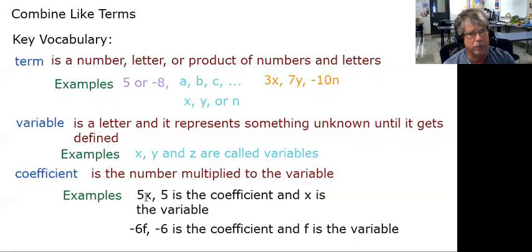So that happens when you have a number and a variable present in a product. Negative 6 times F or negative 6F, the negative 6 is actually called the coefficient and F is the variable. So that's some of the vocabulary that we get into.